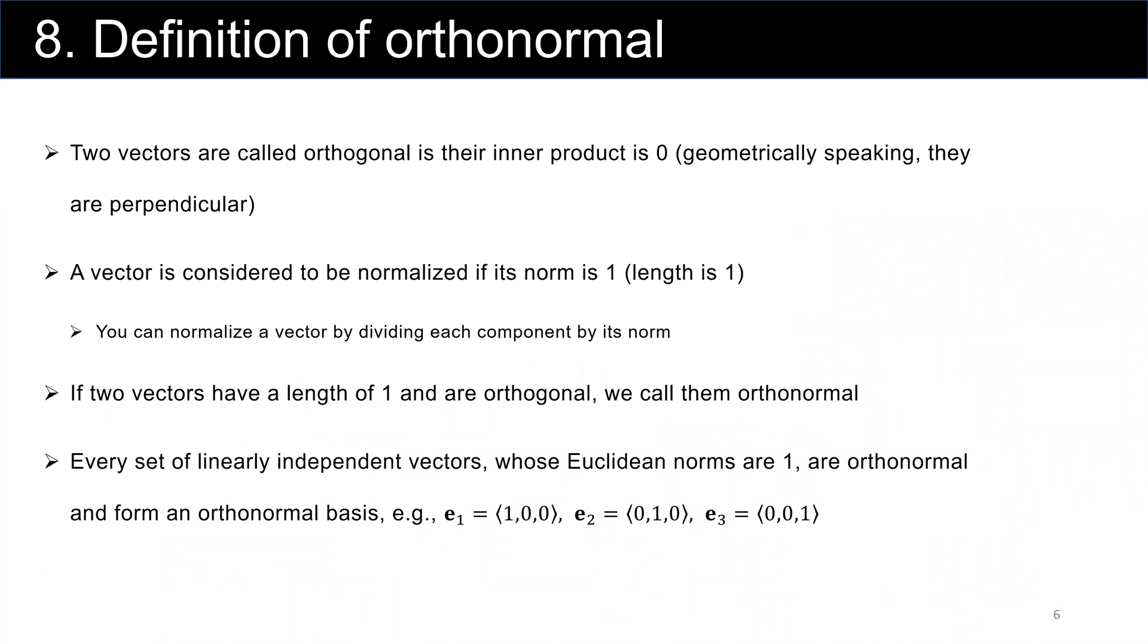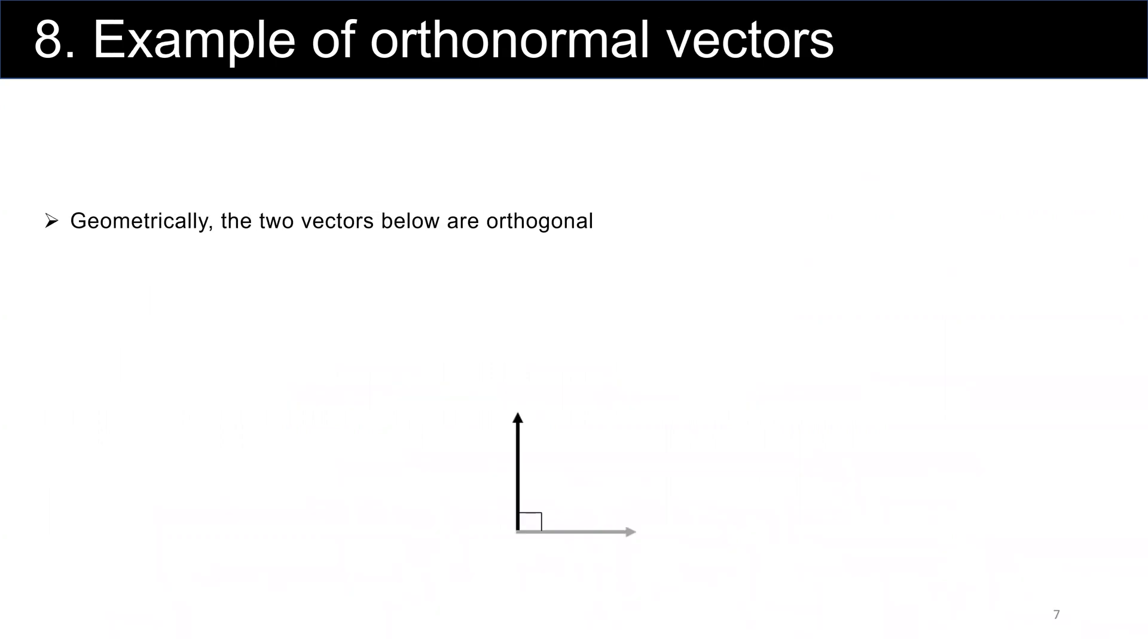But as we talked about before, the basis for n-dimensional space is not unique. If you want to show orthogonal vectors geometrically, the two vectors are perpendicular. This is vector x, this is vector y. If they are orthogonal and norm of x is 1 and norm of y is also 1, then we call them orthonormal.